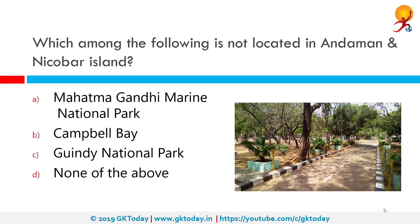Which among the following is not located in Andaman and Nicobar island? The correct answer is Guindy National Park. Guindy National Park is a 2.70 km² protected area of Tamil Nadu located in Chennai.